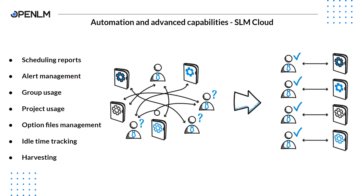You can define your groups in SLM or synchronize them with your Active Directory. When you have groups defined in SLM, you can apply filters in the reports to see usage data specific to these groups, or you can use the dedicated report called group usage. There is also an option to set up project-wise usage in SLM. You can utilize a small component called the Workstation Agent, which needs to be installed on the engineer's workstation. This will allow engineers to pick the project they are working on and tie usage to that project. This is useful if companies want to know how many resources were spent on a specific project or if they are doing back-charging according to usage.